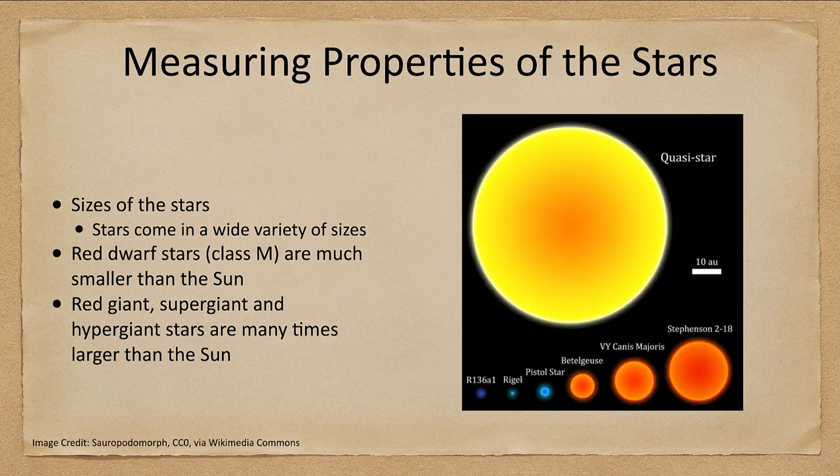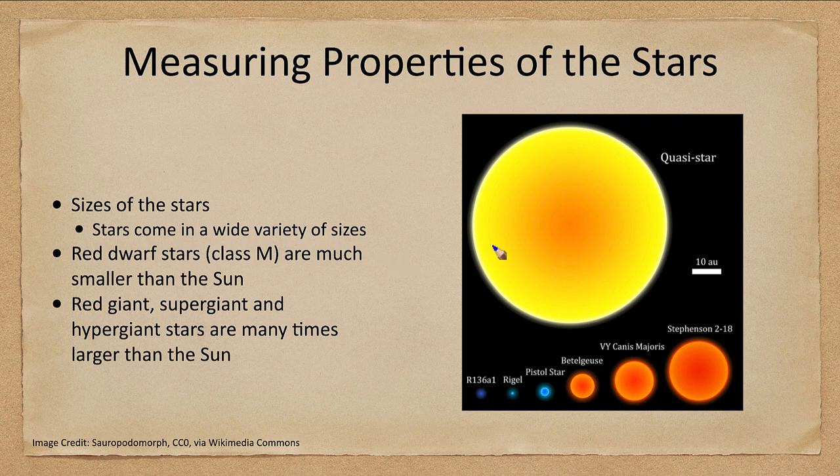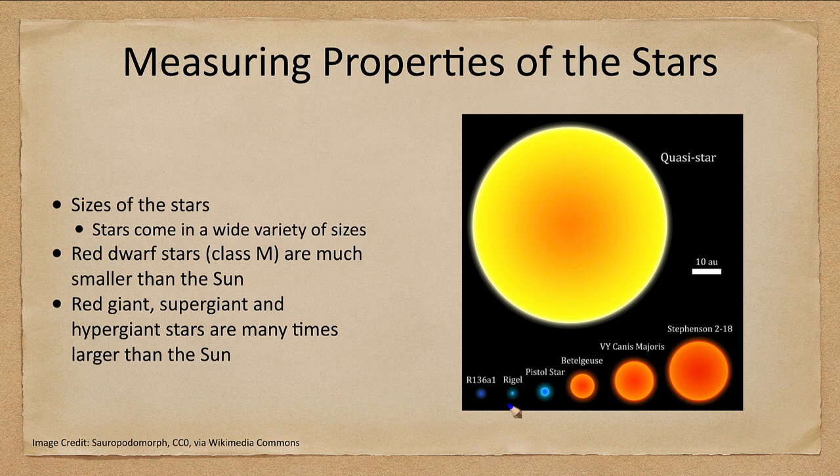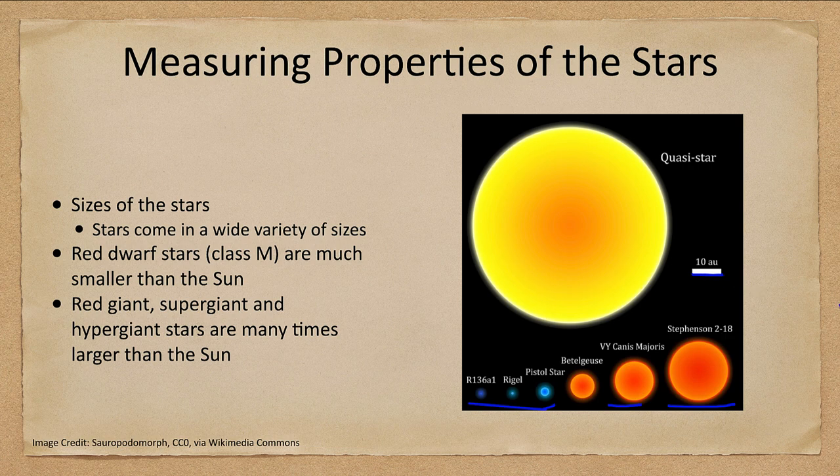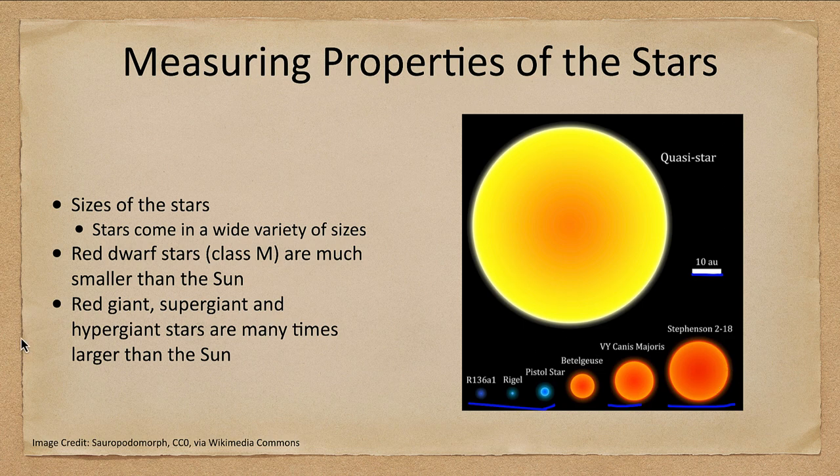Here we see some of those in images that we go from these very hot stars here, already many times larger than our sun, to things like VY Canis Majoris and Stevenson 2-18, which are vastly larger than the sun. We see for scale 10 astronomical units here. That is about the distance to Saturn. So many of these stars, if you place these at the center of the solar system, would stretch out beyond Saturn.